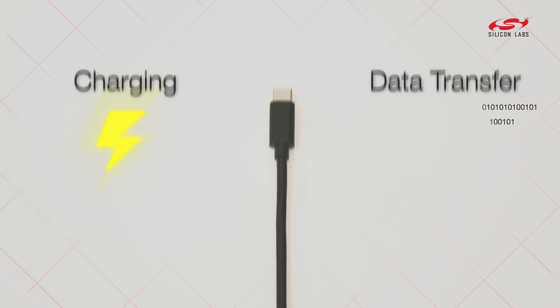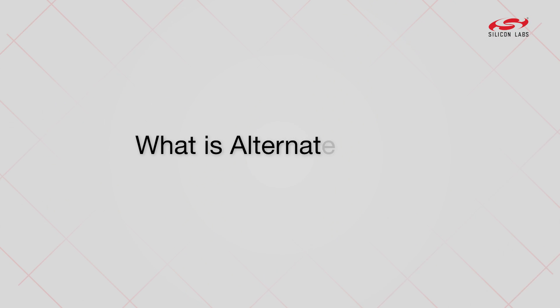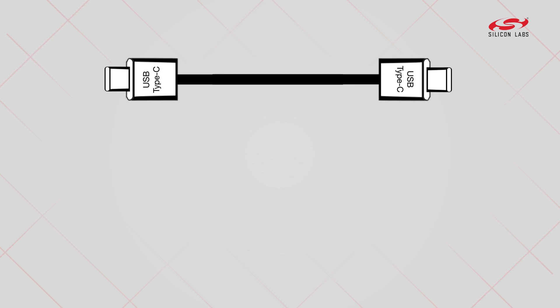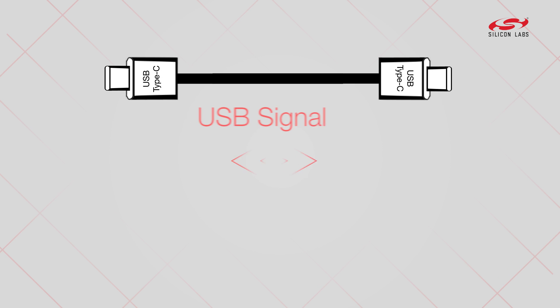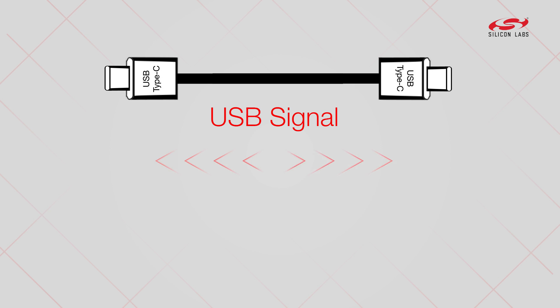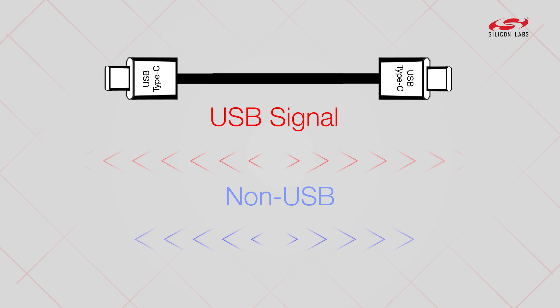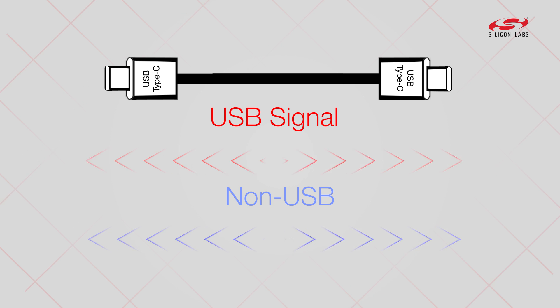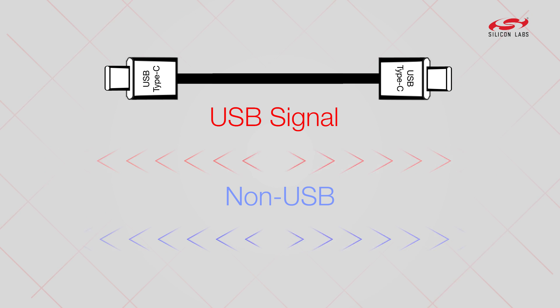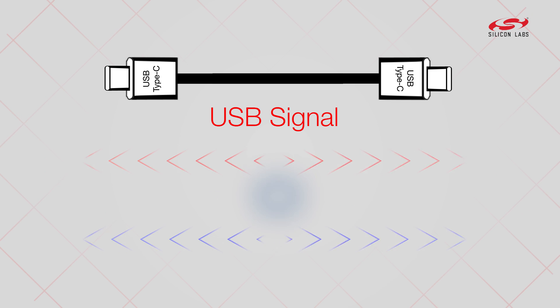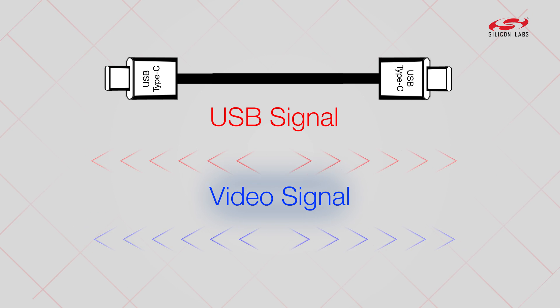This is where alternate mode comes in. So what is alternate mode? Alternate mode is a new feature in USB Type-C, allowing for standard USB Type-C connectors to carry non-USB data. One of the most notable examples would be the ability to carry a video signal.